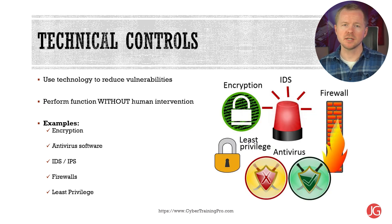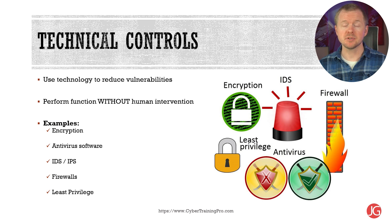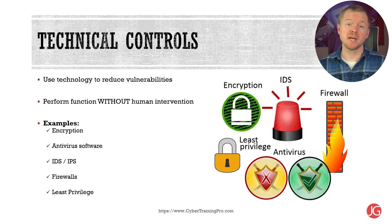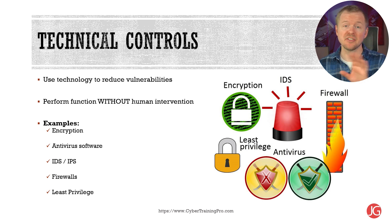Physical and environmental protections such as cameras and heating and ventilation systems are also operational controls. Technical controls use hardware or software to reduce vulnerabilities and should perform their function automatically without human intervention. Common examples include encryption to protect confidentiality, antivirus software to prevent malicious software, IDS or intrusion detection systems, IPS or intrusion prevention systems to detect malicious traffic, firewalls to permit or deny traffic based on rules, and least privilege meaning users have only the access they need to do their job.